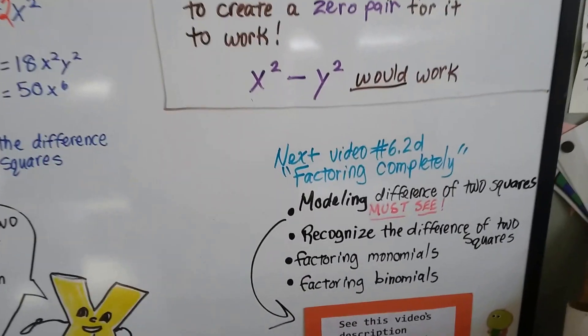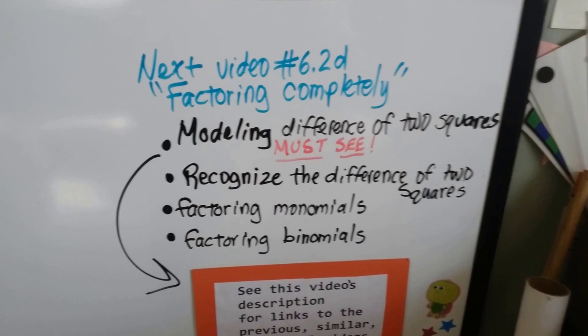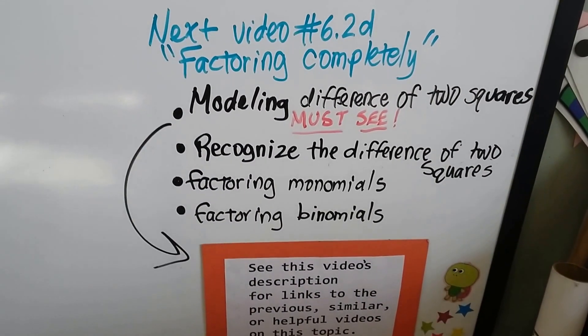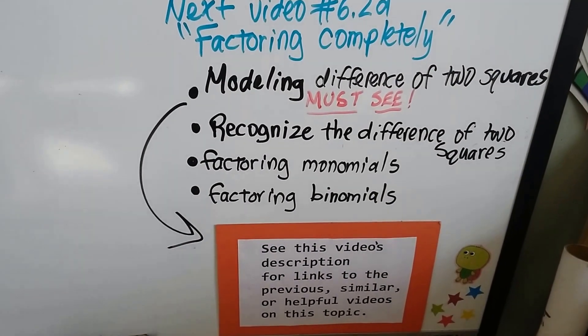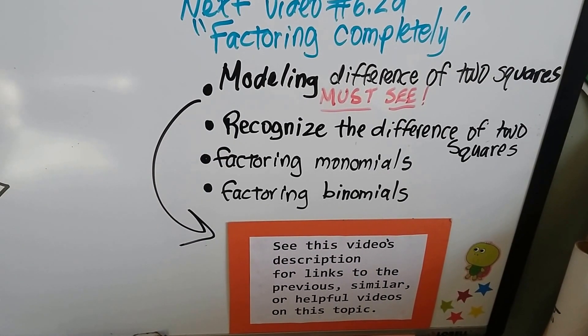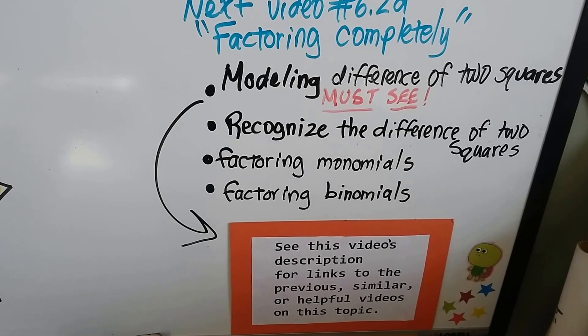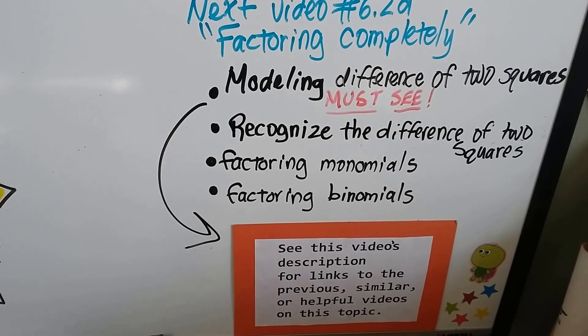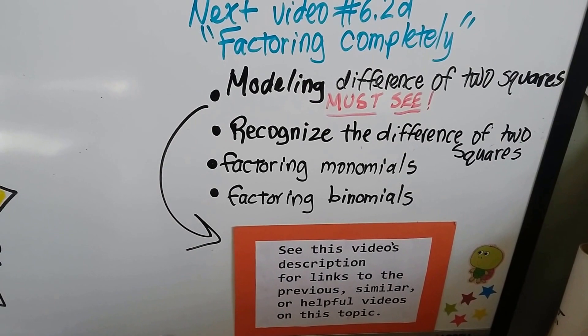Now in the next video, we're going to be talking about factoring completely. That's going to be number 6.2d. And the video I made before this one, I actually got some construction paper and I did modeling of the difference of two squares. If you haven't seen it, there's a link in this video's description. You really should see it, then you'll really understand what's going on.